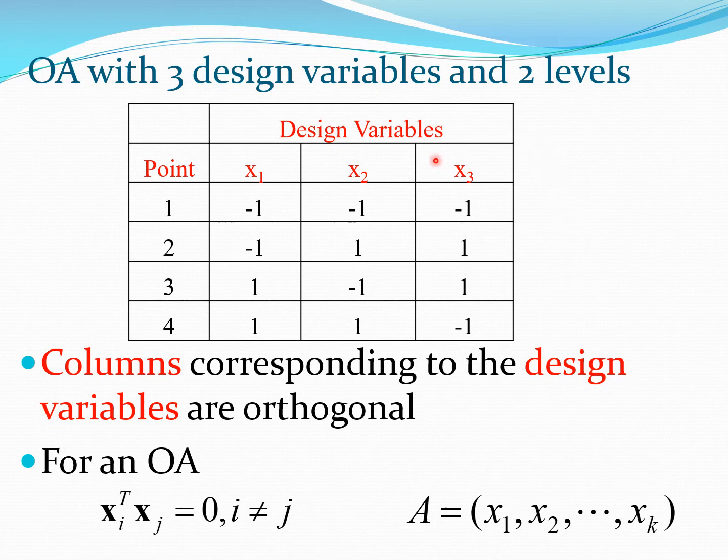So let's get started and look at one of these particular designs. This is a design where you have three design variables x1, x2, and x3, and you have four points 1, 2, 3, 4 in which you run these designs, and there are two levels for each of these design variables which are put as minus 1 and 1 in terms of our usual coded variables. Minus 1 would correspond to the low level, 1 would correspond to the high level. Now one of the things you can check whenever you have an OA presented to you is that x_i transpose x_j should be 0 for i is not equal to j.